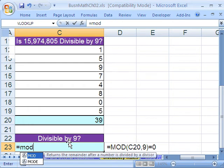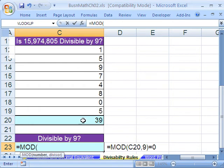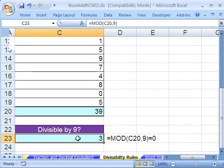So let's try it. Equals mod, I'm going to click on this, comma, 9. Because remember the mod, you put the number in the divisor and it gives you the remainder. So when I hit enter, it better equal 3. Oh, that means, because it's not 0, that it is not divisible. 39 is not divisible by 9.